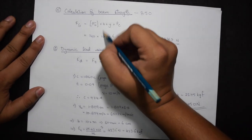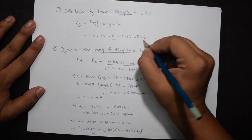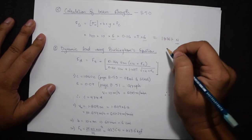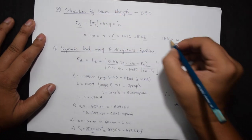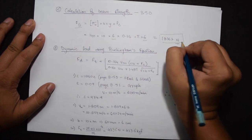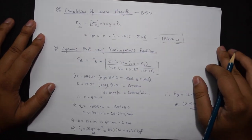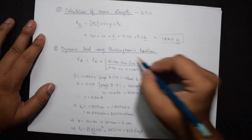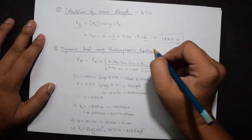This comes out to be 18,367 newtons. Step 6 is calculation of dynamic load using Buckingham's equation. Now Buckingham's formula is given on the very next page 8.51.